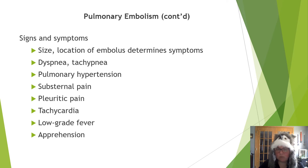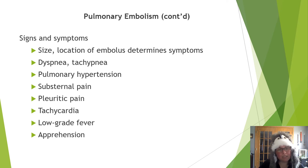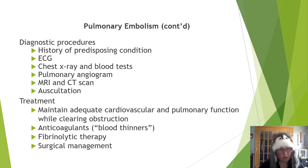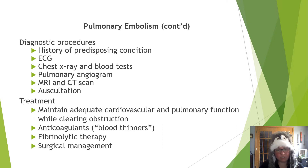Signs of PE depend on the size and location of the embolus. Symptoms include dyspnea, tachypnea or rapid breathing, pulmonary hypertension, substernal pain — below the sternum — pleuritic pain, tachycardia, low-grade fever, and apprehension or confusion. PE is diagnosed with history of predisposing conditions, ECG, chest x-ray, blood tests, pulmonary angiogram, MRI, CT, and auscultation.